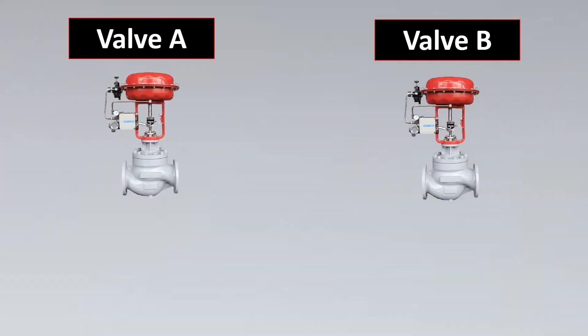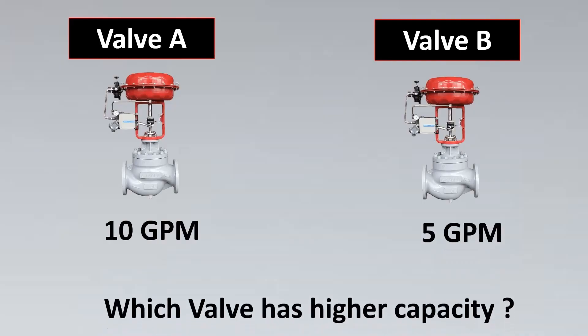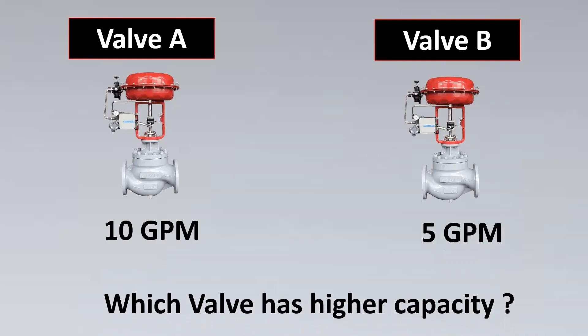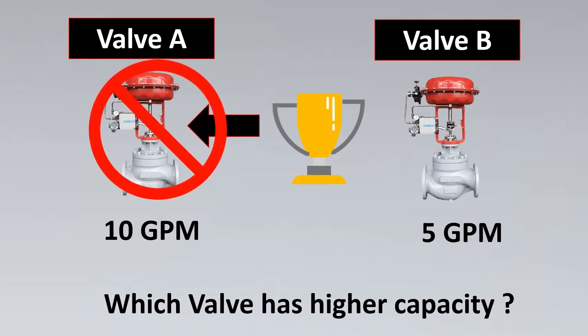Imagine that we have two valves, valve A and valve B. Valve A has a capacity of 10 GPM while valve B has a capacity of 5 GPM. Now which valve has a higher flow capacity? If the answer is that valve A has a higher flow capacity, then the answer is not correct.